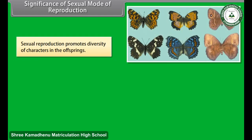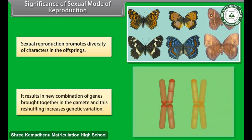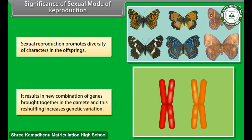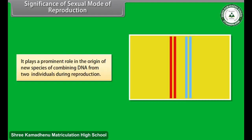Sexual reproduction promotes diversity of characters in the offspring. It results in new combinations of genes brought together in the gamete, and this reshuffling increases genetic variation. It plays a prominent role in the origin of new species by combining DNA from two individuals during reproduction.